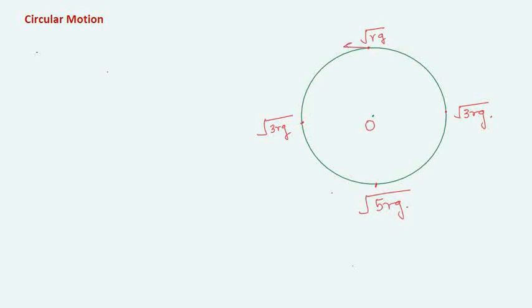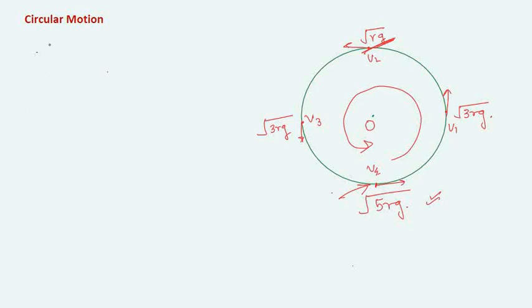Let the direction of motion be this way, and let me call the velocities v1, v2, v3, and v4. So the minimum velocity at the lowest point to complete the whole circle must be √(5rg). If the velocity is less than √(5rg), then the particle will not reach the highest point. We are going to work on a problem where the minimum velocity at the lowest point is less than √(5rg).